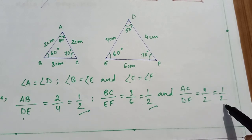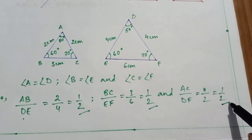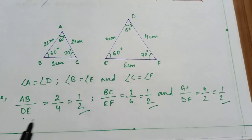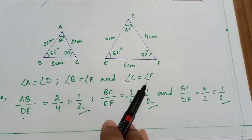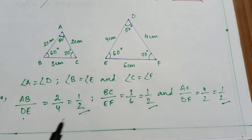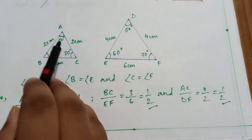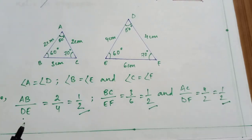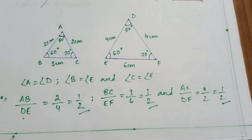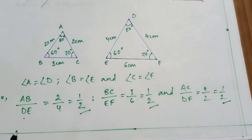AC by DF is equal to 1 by 2. So the corresponding angles are equal and corresponding sides are proportional, so these are similar figures.